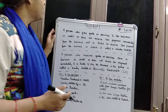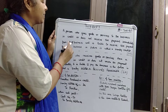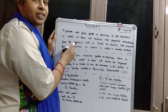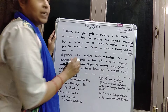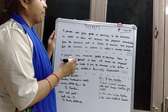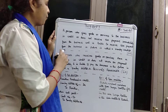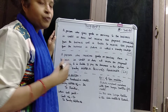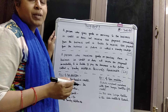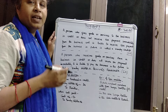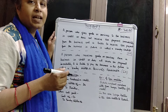Look at the board. A person who gives goods or services to the business on credit — not in cash — and does not receive the payment immediately from the business, but is able to receive the payment in the future, is called the sundry creditor. Sundry creditors are persons who give goods or services on credit, not in cash.